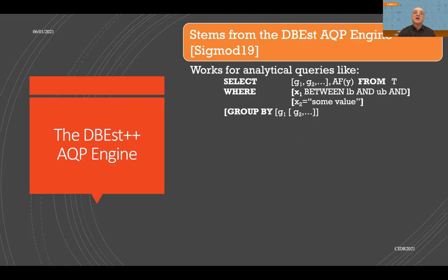Now let me describe what this new engine is all about. It's based on the DBS AQP engine we developed a couple of years ago, published at SIGMOD 2019. The typical queries it supports include a bunch of grouping attributes, aggregation attributes, continuous or ordinal attributes where you can specify range predicates, and categorical attributes where you can have equality or non-equality predicates.